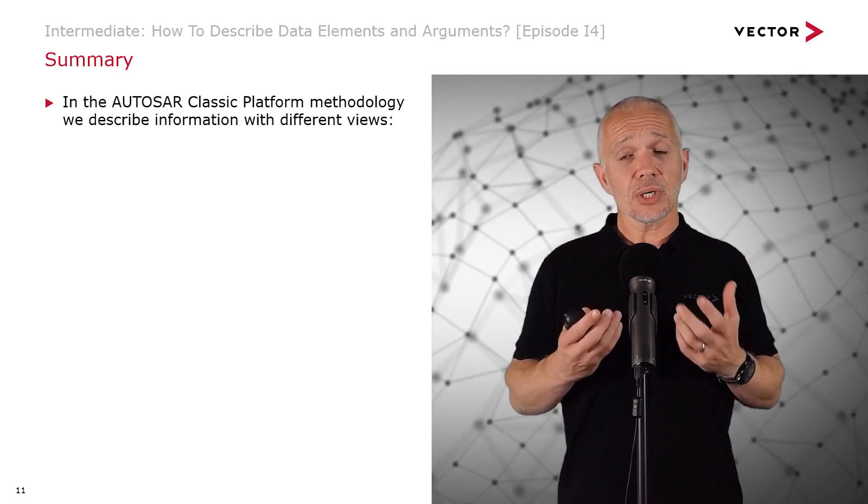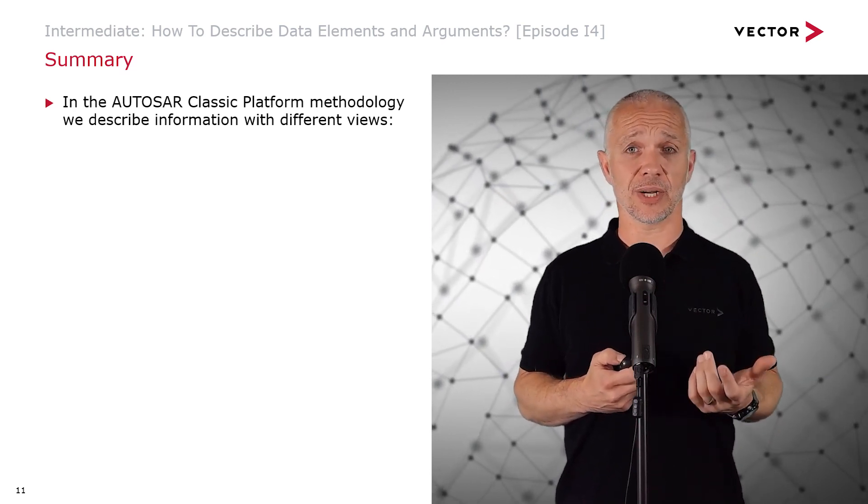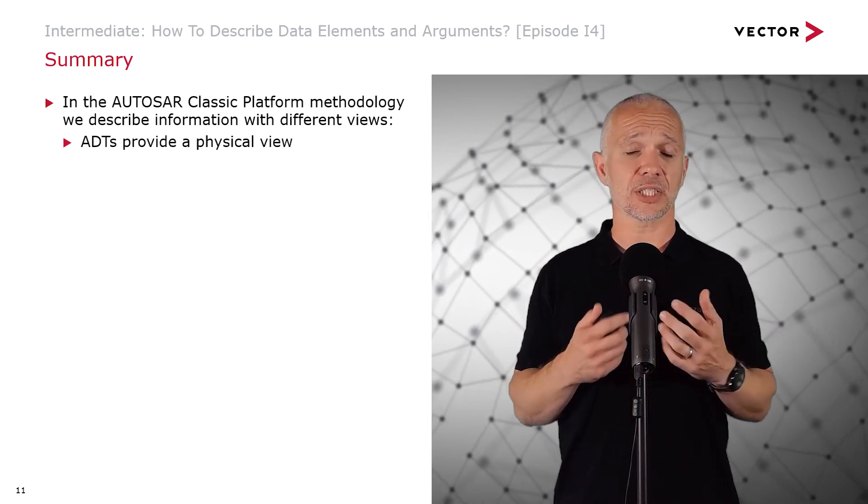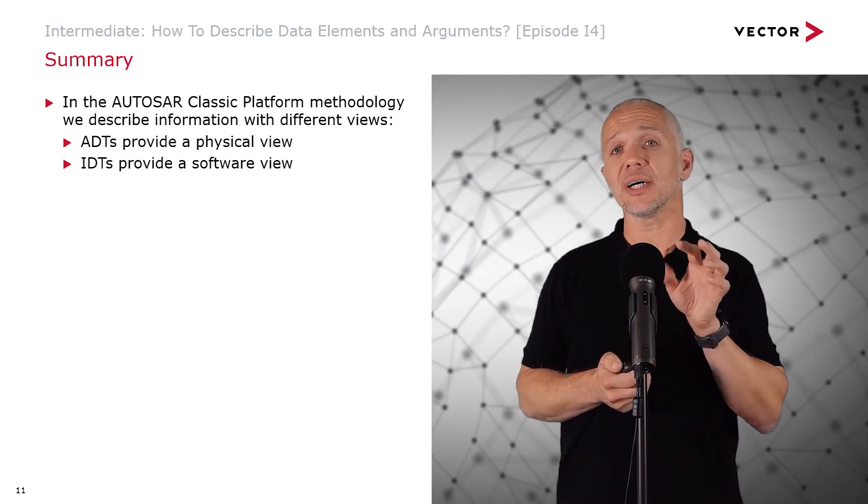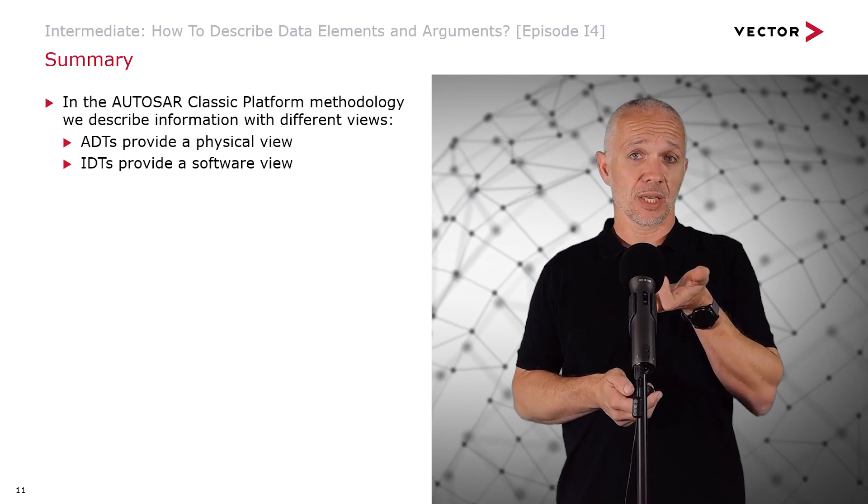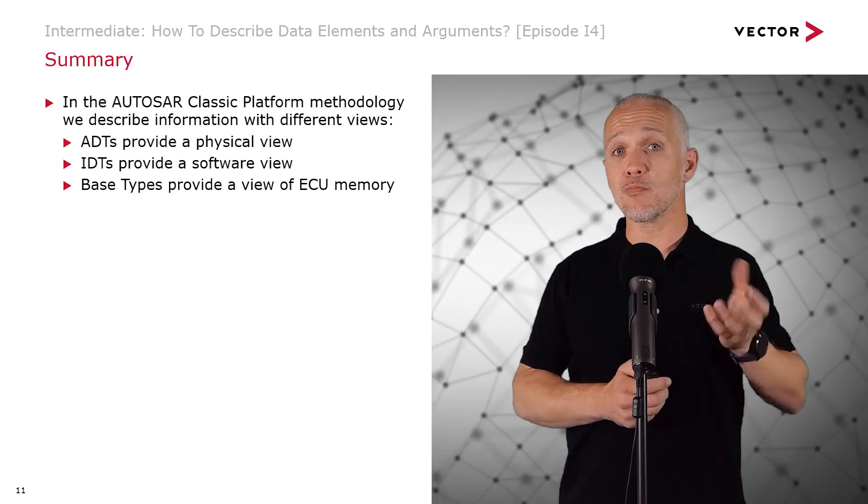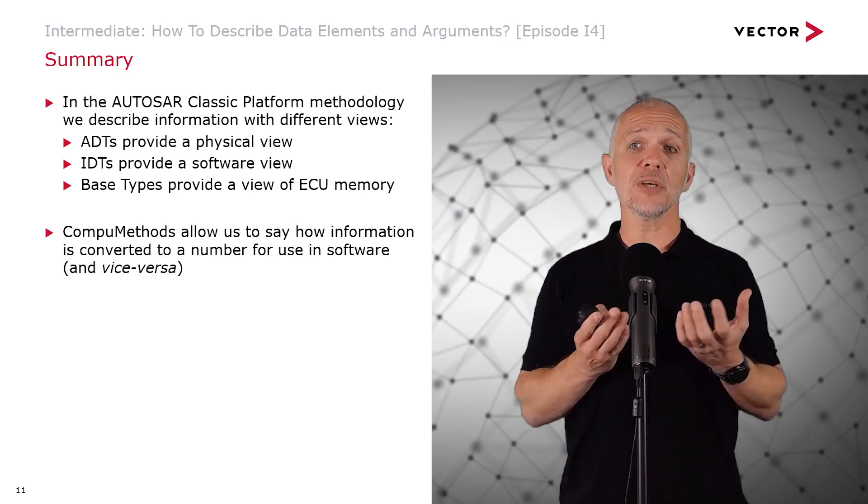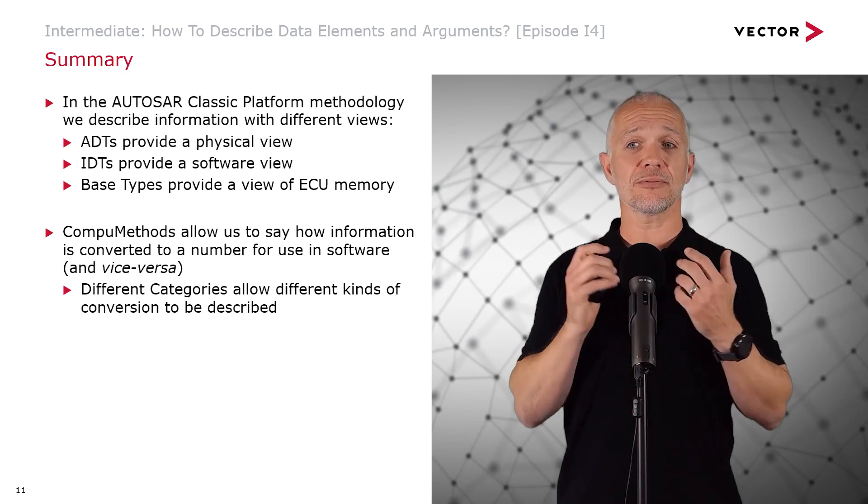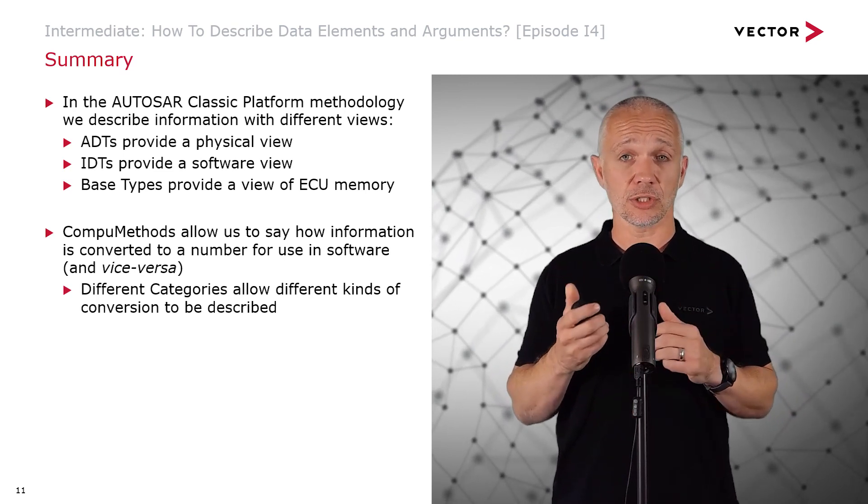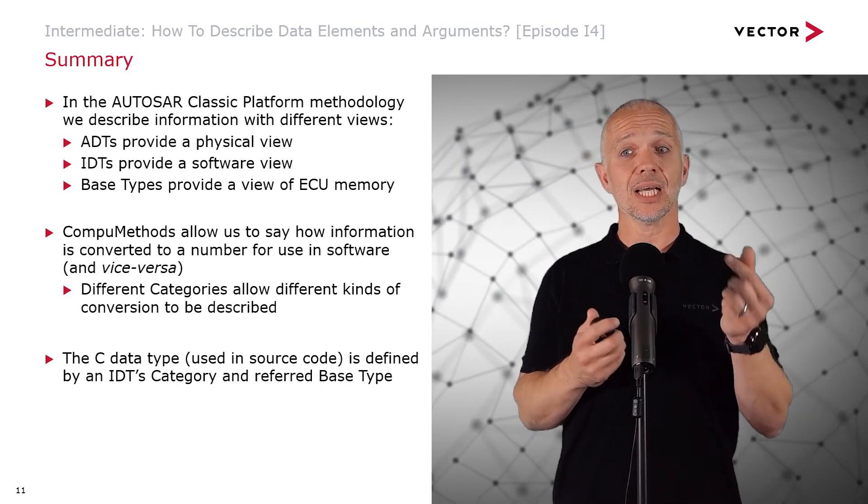As a summary, in the AUTOSAR Classic Platform methodology, we describe information with different views that correspond to different levels of abstraction. Our most abstract and intuitive view is application data types that give us a physical view of things we want to work with in software. At the next level, we have the IDTs, which represent how that information will be in the software, how it will appear. And base types provide a view that corresponds to how ECU memory will be used to hold information. CompuMethods allow us to say how information should be converted to a number for use in software, and vice versa. Different categories on CompuMethods allow different kinds of conversion to be specified. The C data type that is used in source code is defined by an IDT's category and referred base type.